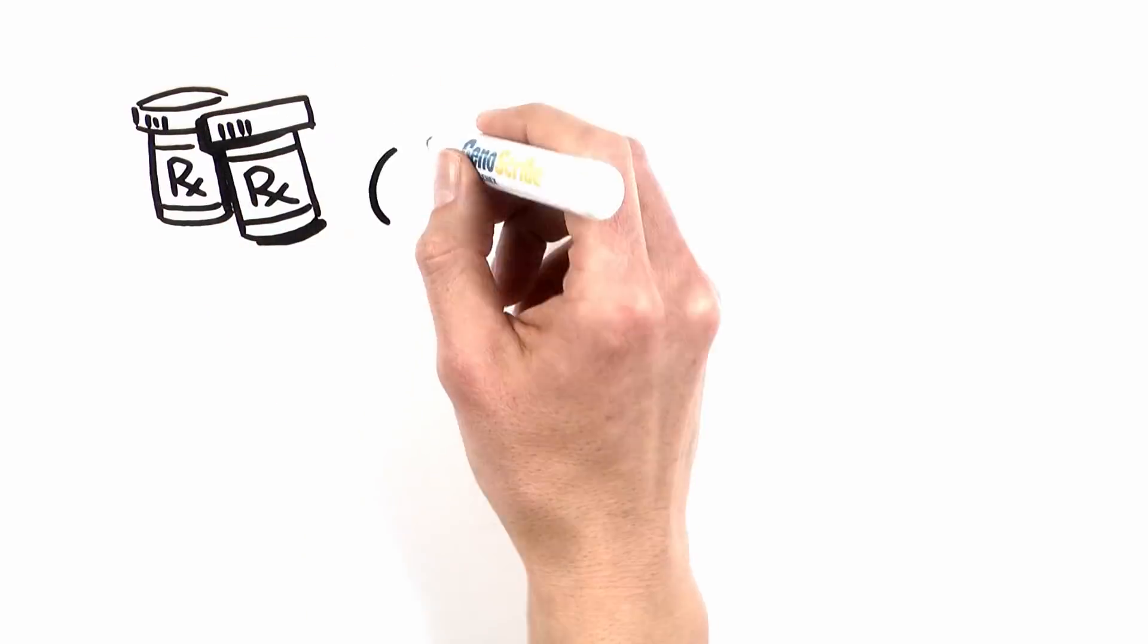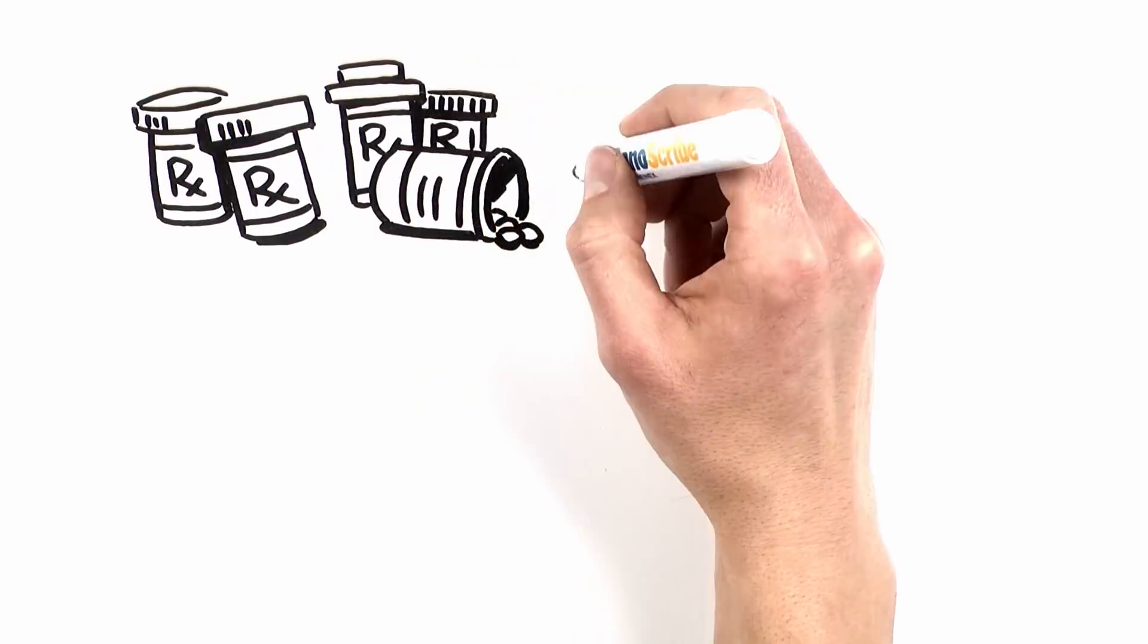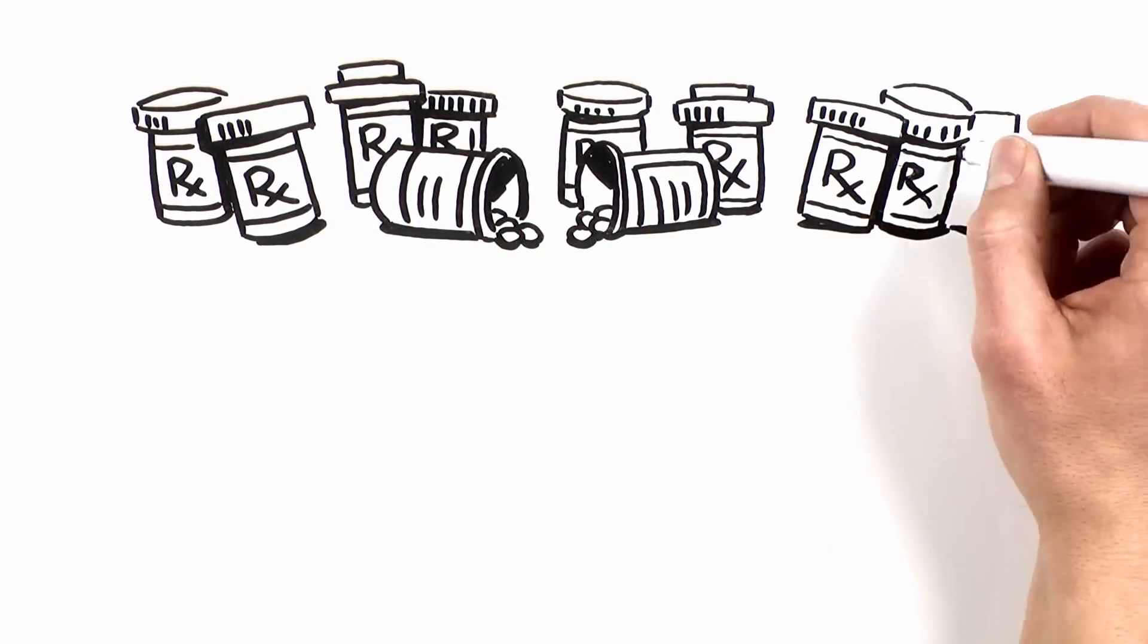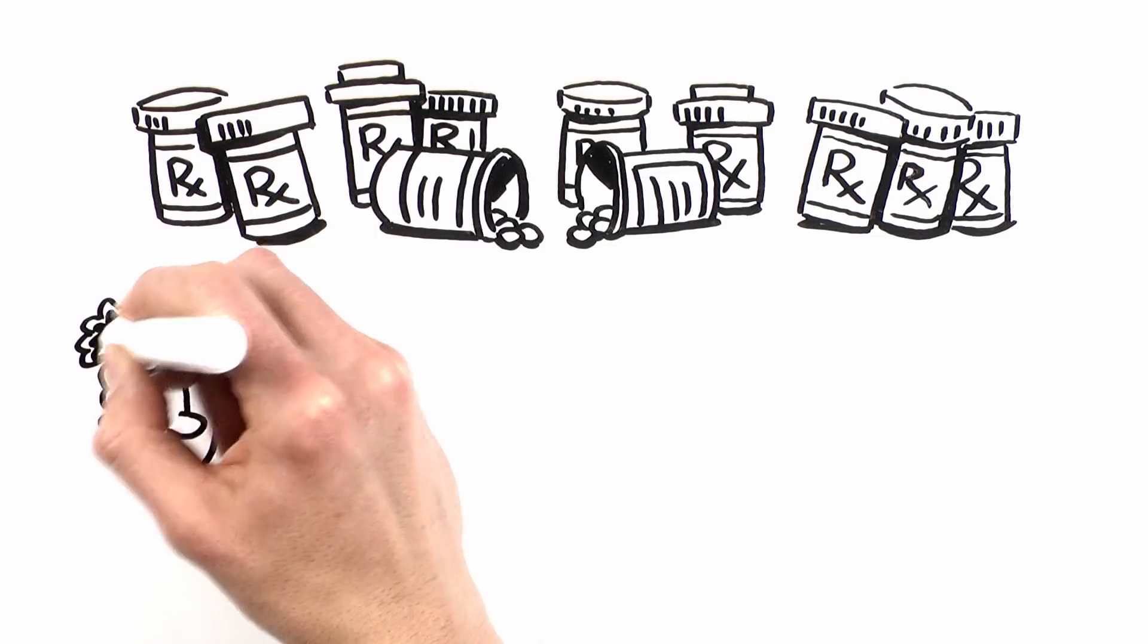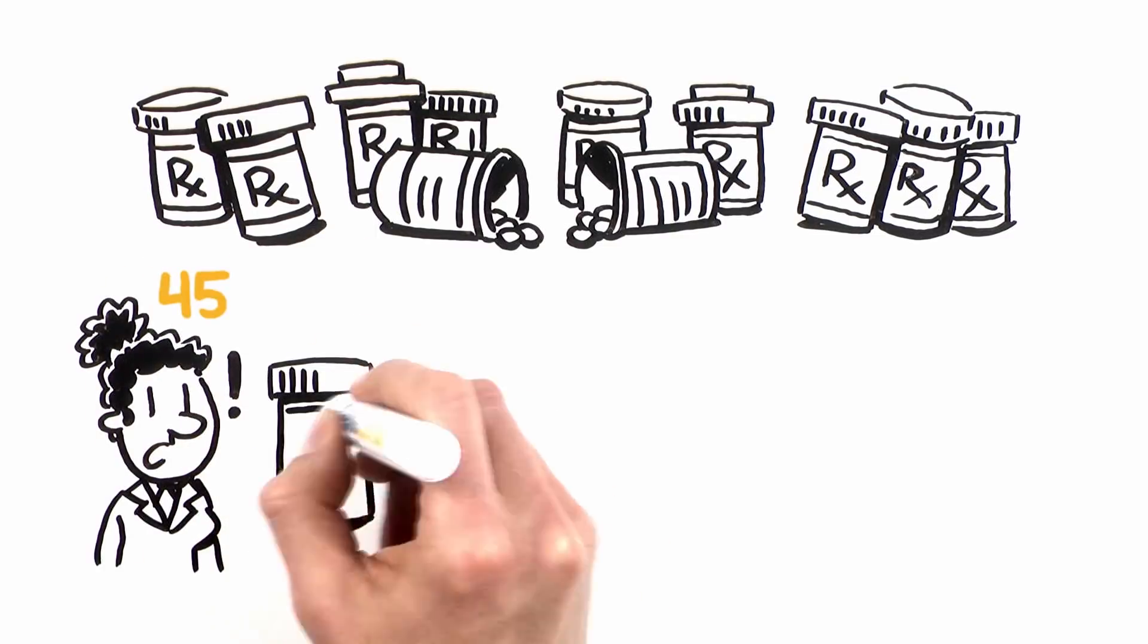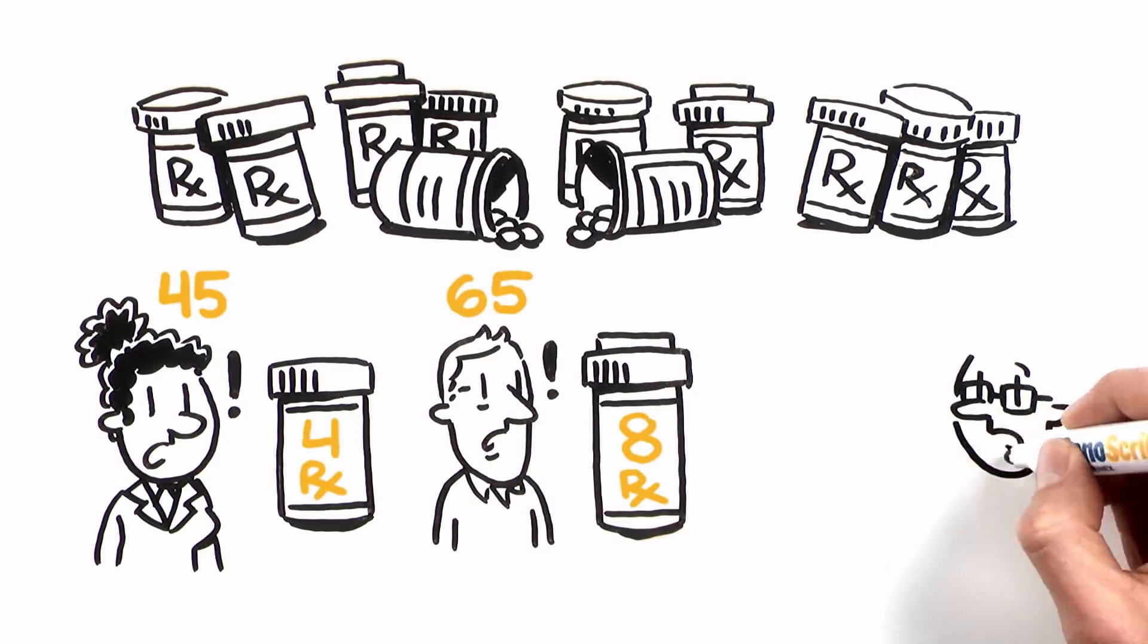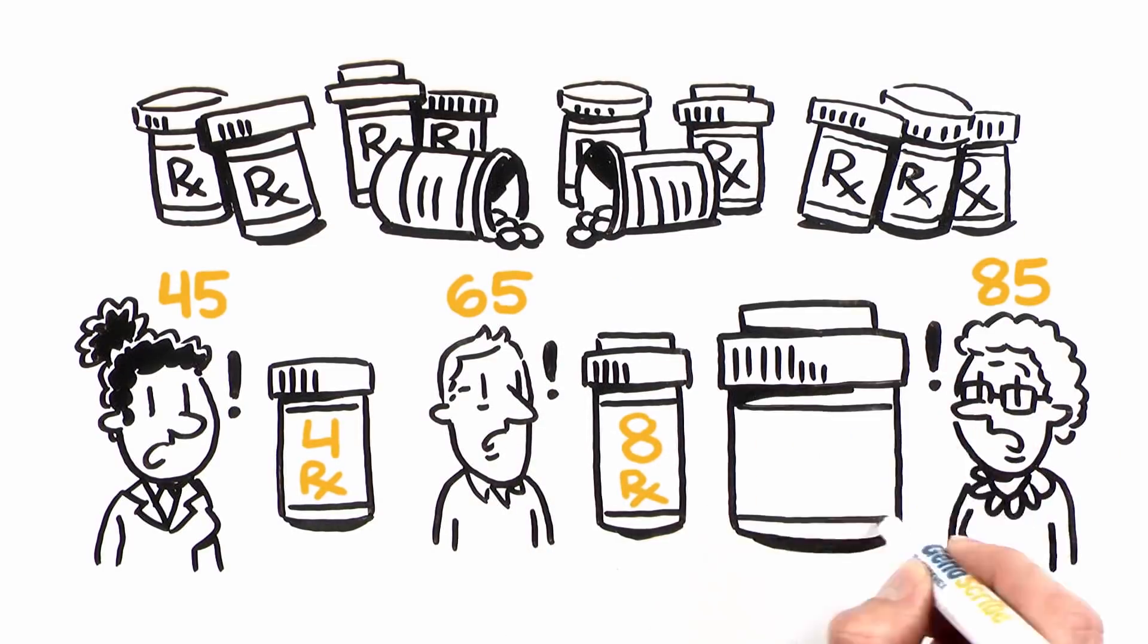How many prescription medications do you think you'll take at 25, 45, 65, or 85? The average 45-year-old takes four prescription medications. By 65 years old, 8, and by 85, 16.